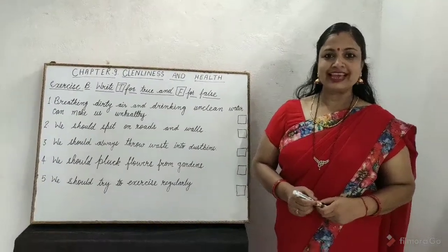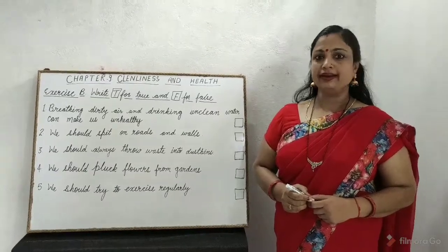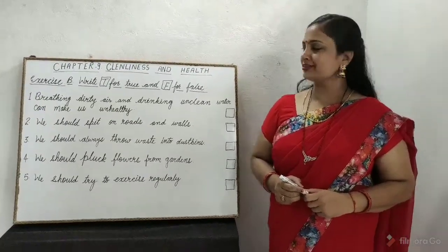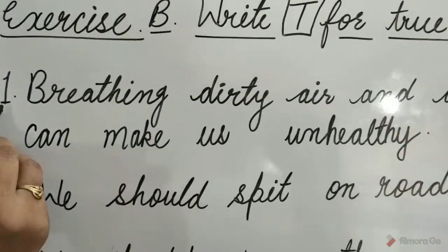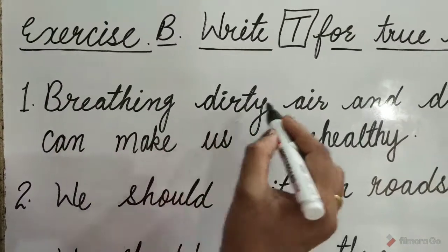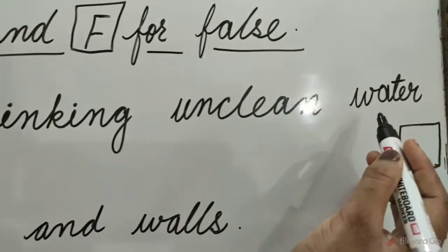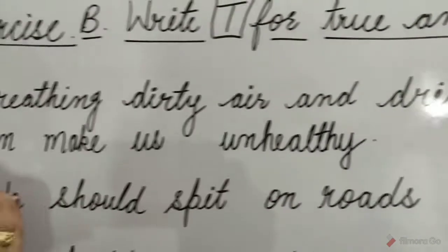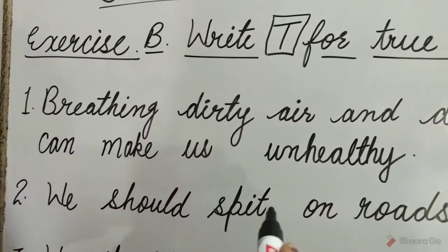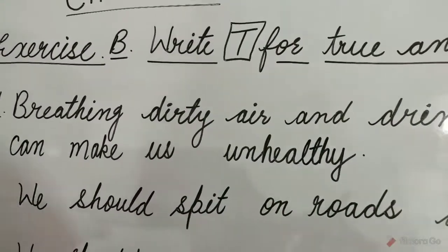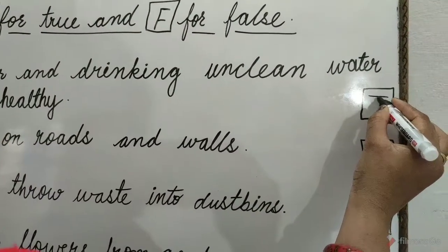Children, let's solve Exercise B. Write T for true and F for false. Question 1: Breathing dirty air and drinking unclean water can make us unhealthy. Yes children, this is true. So write T in the box.